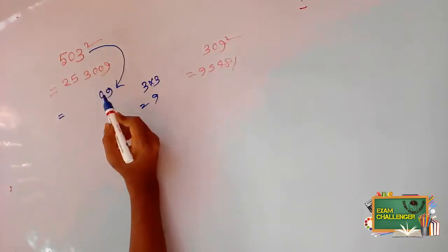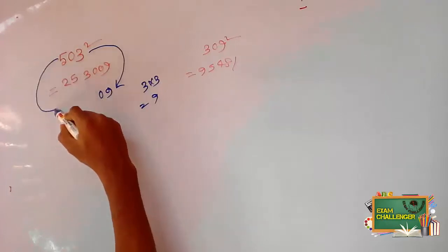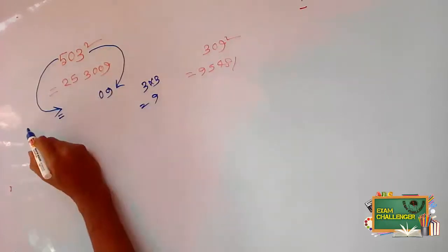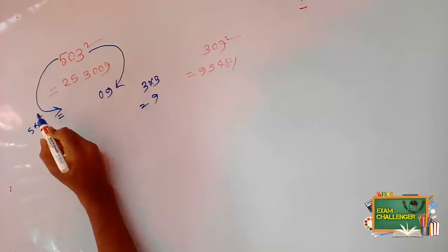Put a 0 here. Now it becomes a larger number. Next, there is 5 here. 5 into 5.